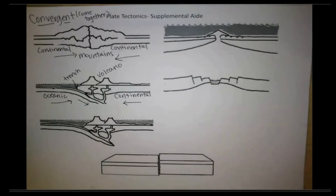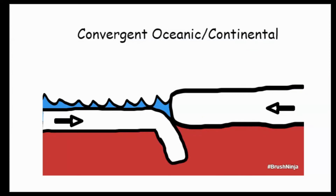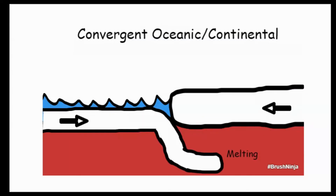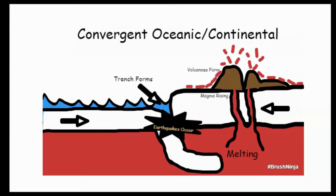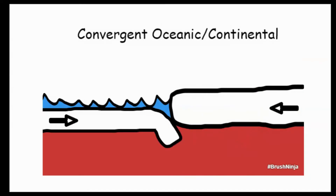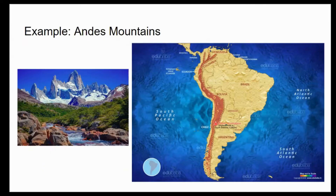Let's look at this a little bit more closely. Here we have an animation of the two plates coming together. We have the oceanic diving down underneath the continental. It melts, then rises up to the surface and forms volcanoes. We also have a trench form. A common example is the Andes Mountains in South America. It forms all along the South American plate, with a lot of tall mountains and a lot of earthquakes.